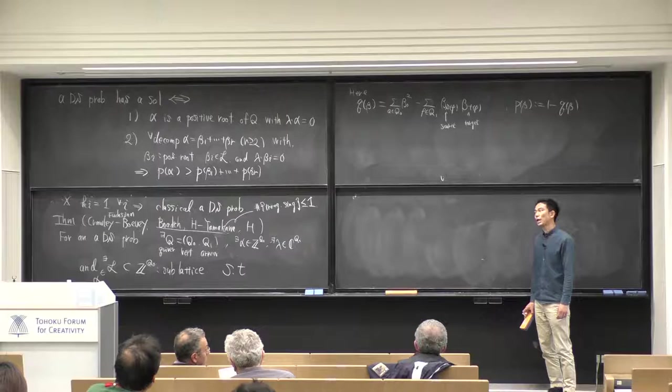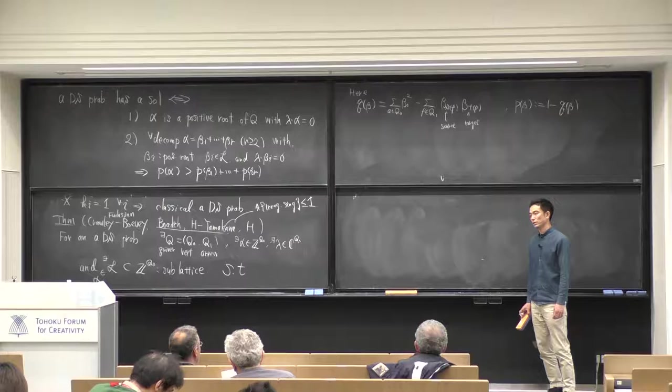It is known that sometimes it can be constructed by using the multiplicative analog of the quiver variety.